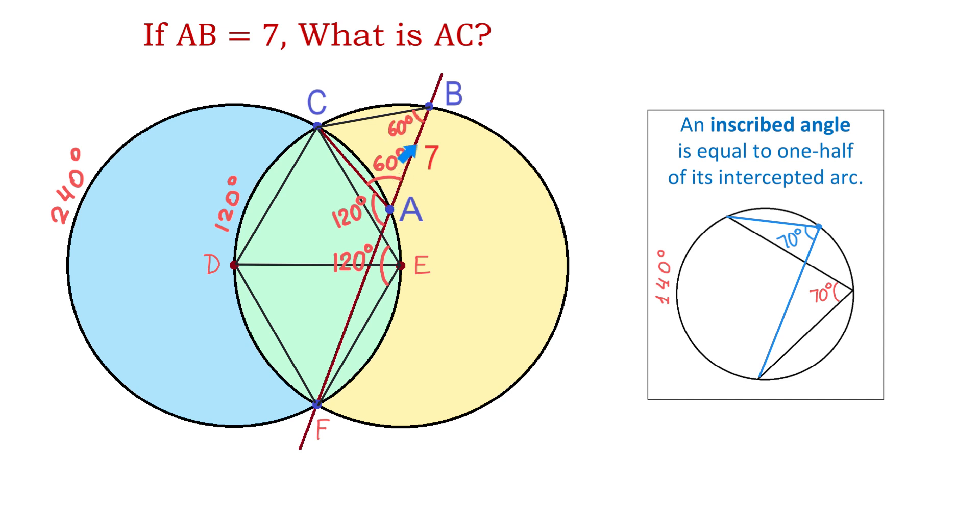And now, in the triangle ABC, if this angle is 60 degrees, and this one is also 60 degrees, then angle C will also be 60 degrees.